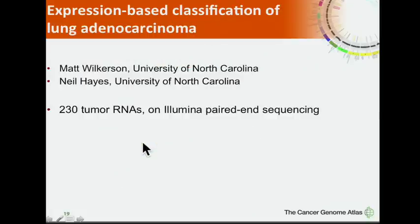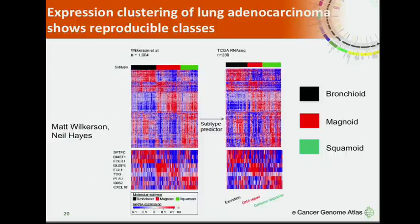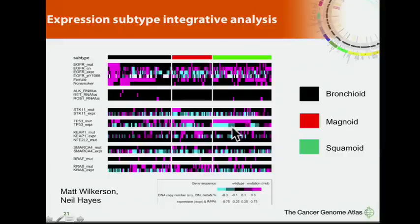Expression-based classification of lung adenocarcinoma — elegant work by Matt Wilkerson and Neil Hayes at the University of North Carolina — shows reproducible classes: the bronchioid, magnoid, and squamoid subtypes, using a subtype predictor based on over 1,000 lung adenocarcinoma expression profiles. The bronchioid subtype is most enriched for non-smokers and for EGFR mutation, as well as ALK, RET, and ROS fusions. SMARCA4 and KEAP1 mutations are both enriched in the magnoid subtype.